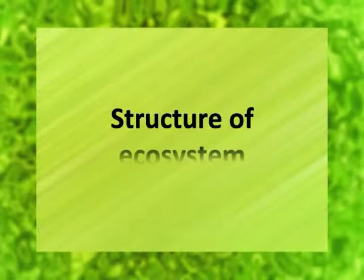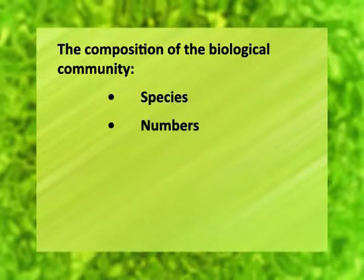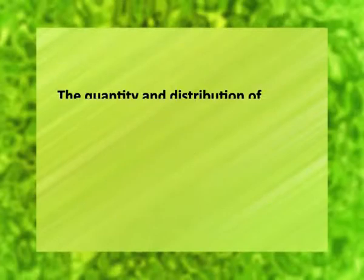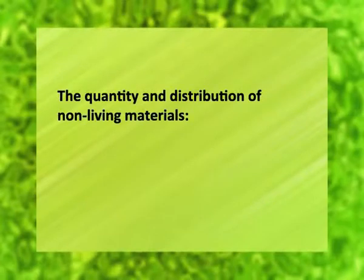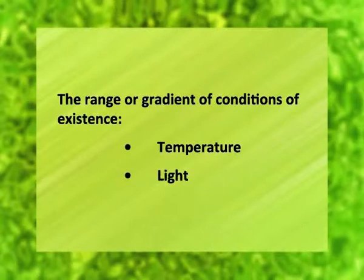Now, dear students, we will see the structure of ecosystem. By structure, we mean the composition of biological community, including species, number, biomass, life history, and distribution in space. The quantity and distribution of non-living materials such as nutrients, water, etc., and the range or gradient of conditions of existence such as temperature, light, etc.